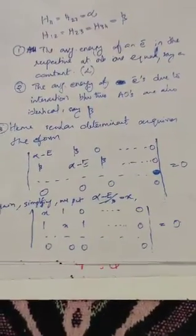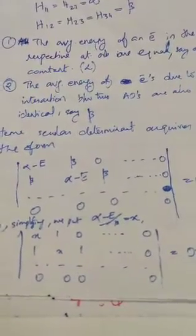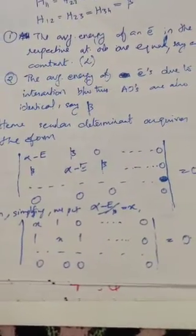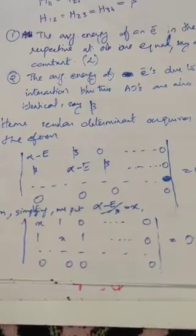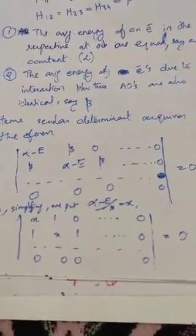After these two approximations proposed by Huckel, the secular determinant attains a different form with (alpha − E) on the diagonal and beta on the off-diagonal elements, with zeros elsewhere. The determinant equals zero. We then simplify this secular determinant by introducing a new variable X, where X equals (alpha − E) divided by beta, giving a much simpler secular determinant form.